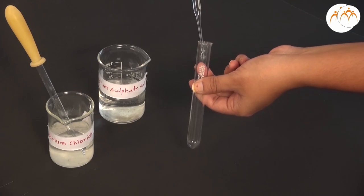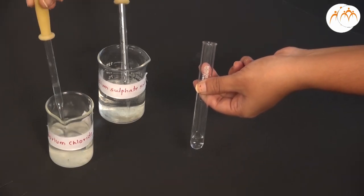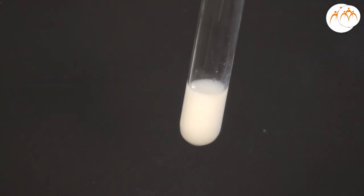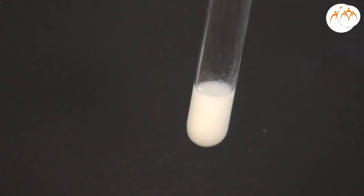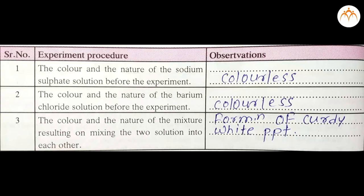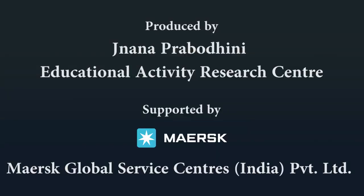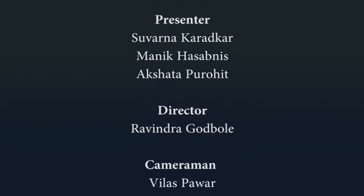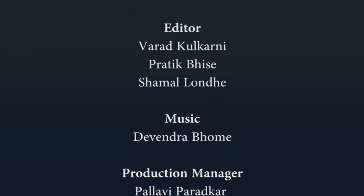Now take Na2SO4 in a test tube. Add BaCl2. After reaction, we observe white precipitate of barium sulphate. The compounds white precipitate of BaSO4 and colourless NaCl are formed by mutual exchange of ions. Therefore, it is double displacement reaction.